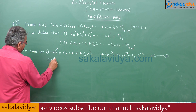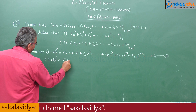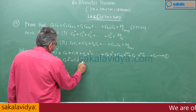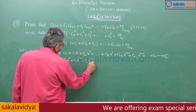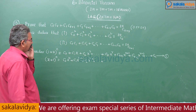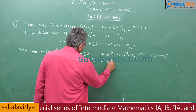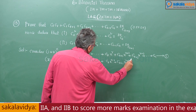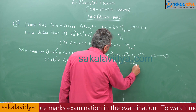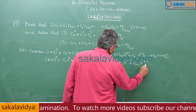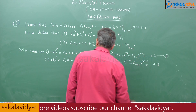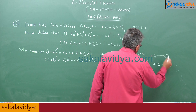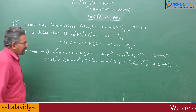Similarly, write the expansion of (x+1)ⁿ: this gives Cᵣxⁿ⁻ʳ + Cᵣ₊₁xⁿ⁻ʳ⁻¹ + Cᵣ₊₂xⁿ⁻ʳ⁻² + ... + Cₙ. Call this equation 2.